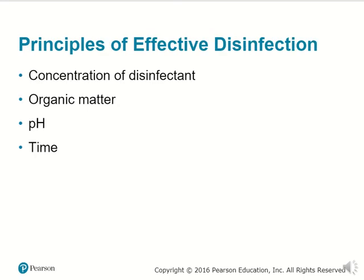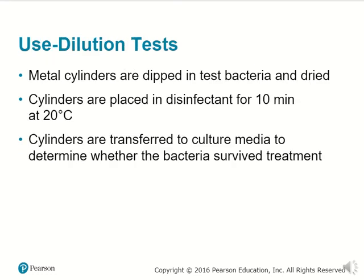Principles of effective disinfection can involve a variety of things, such as the concentration of a disinfectant, the particular organic matter present, the pH level that could be too acidic or basic for any particular microbe, and also the amount of time a certain disinfectant is applied. The longer disinfectants are applied, the better they become at decreasing a large proportion of an initial microbial population.